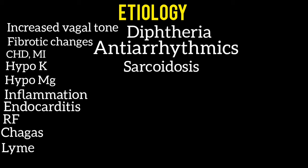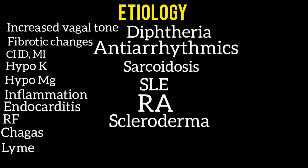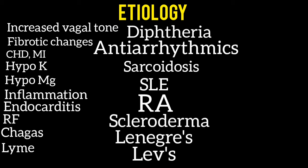Infiltrative diseases like sarcoidosis, collagen vascular diseases like SLE, rheumatoid arthritis, and scleroderma, idiopathic degenerative diseases like Lenegre's and Lev's diseases, and neuromuscular disorders are also identifiable causes of first degree AV block.